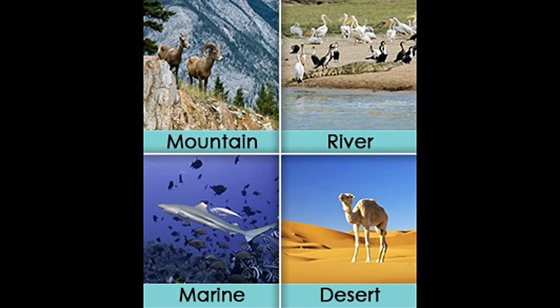The term ecosystem was first coined by a British botanist, Arthur Roy Clatham, in the 1930s, because of a request given by another British botanist, Arthur Tansley. Later, Tansley further used this term in various publications, and became the first president of the Journal of Ecology.